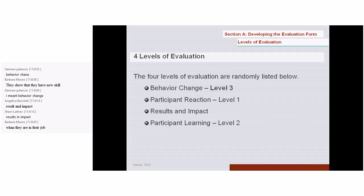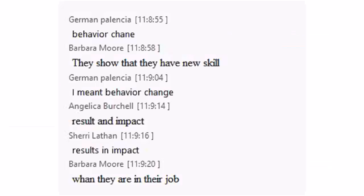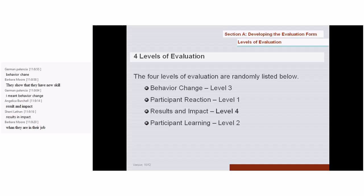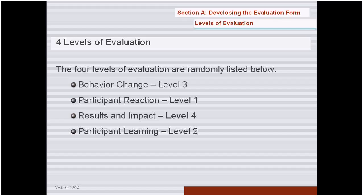Why is behavior change level three and results and impact level four? Because you have to apply the content that you've learned, and then you can evaluate the results from that later. That is exactly correct. You take what you learned about, take it back home — you haven't even really internalized it yet — and you have to work with it, practice it, implement it, and all that moves you into starting to make some changes in your behavior. Everybody got that? Yes.